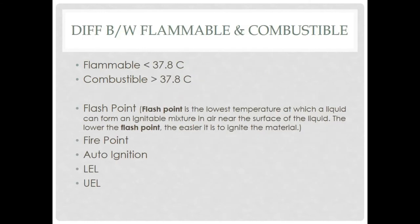First we need to know what flammable and combustible liquids are and how to categorize them. The difference between combustible and flammable is this: a flammable liquid has a flash point less than 37.8 degrees Celsius, while above that it is considered combustible. Now we need to know what the flash point is.